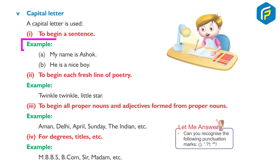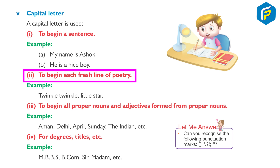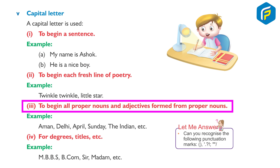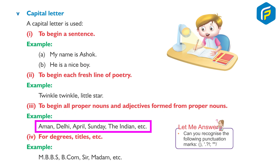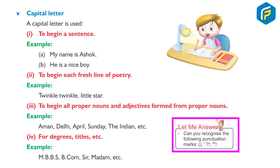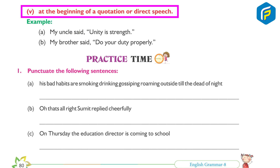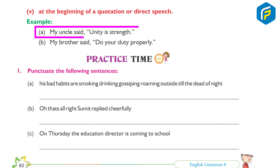Capital letter: A capital letter is used: one, to begin a sentence. Example: My name is Ashok. He is a nice boy. Two, to begin each fresh line of poetry. Example: Twinkle, twinkle, little star. Three, to begin all proper nouns and adjectives formed from proper nouns. Example: Aman, Delhi, April, Sunday, Indian, etc. Four, for degrees and titles. Example: MBBS, Sir, Madam, etc. Five, at the beginning of a quotation or direct speech.